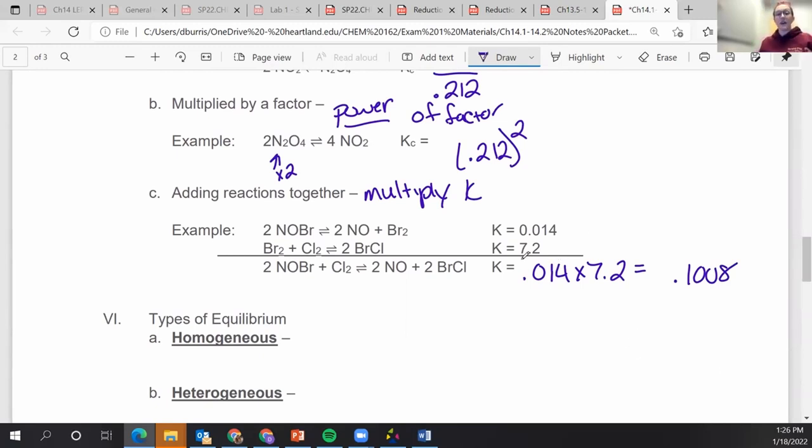So you can actually find the equilibrium constant of a new reaction based on these. But it's not like Hess's law. You have to take the K values one step further.